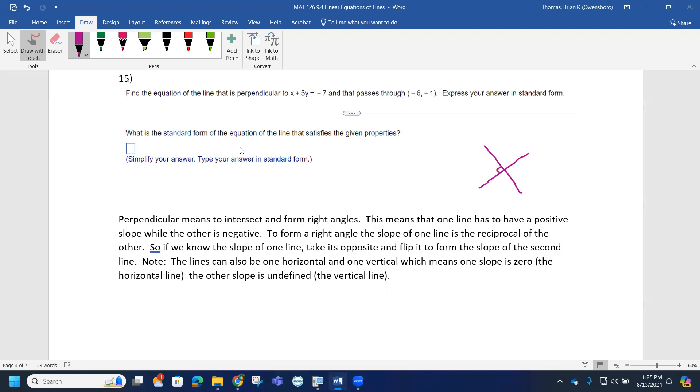But in our problem, let's see what we got. The equation we're given is x plus 5y equals negative 7. And what we know right now is our line passes through negative 6, negative 1, but we still need to know the slope of our line.